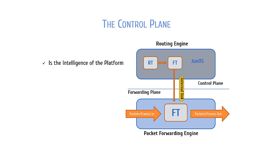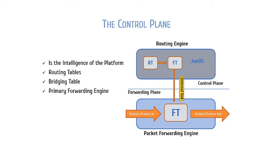The control plane is referred to as the intelligence of the platform. The control plane is home to and maintains the routing table, bridging table, and the primary forwarding table. Keep in mind that the forwarding table contains only active routes and is primarily used to process transit packets. Also notice that the routing table exists in the control plane and not in the forwarding plane. The forwarding table in the control plane is referred to as the primary forwarding table, and the packet forwarding engine gets a copy of the forwarding table from the routing engine through an internal link, which allows for extremely fast updates to the forwarding table in real time.